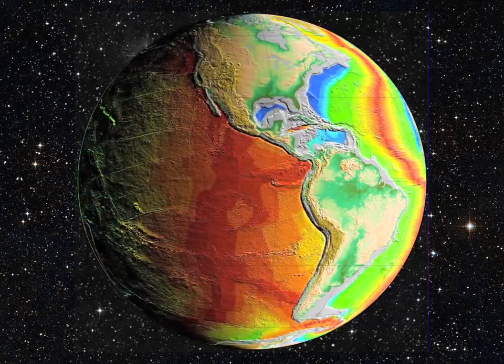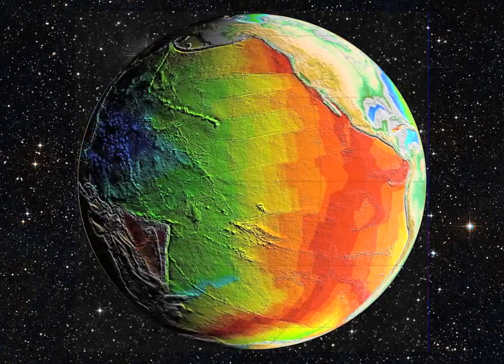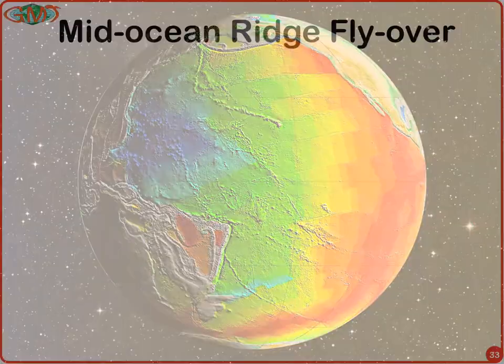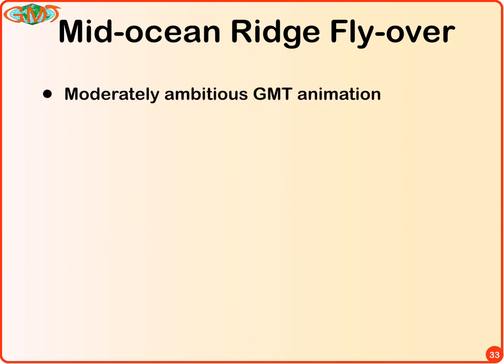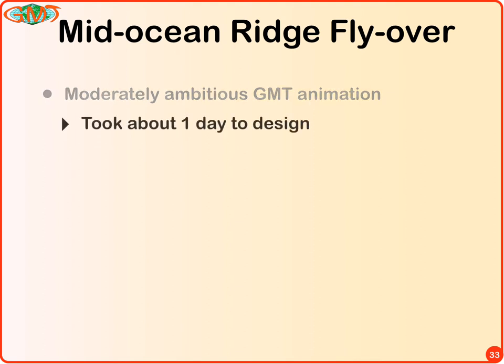A more ambitious undertaking is a flyover of the mid-ocean ridge system — this took me about a full day of work to get right. Since I'm fairly experienced with GMT, it won't take most people much longer. These examples will be part of the GMT distribution as animation examples, because once you have an example to follow it's very simple to modify things. This script made over 5,000 HD resolution frames at 30 frames per second playback — well suited for multiple machines: split all jobs across as many machines as you have and cut down the time. It makes a three-minute movie and took a couple of hours to run on my old 8-core Mac.